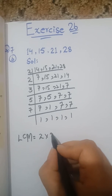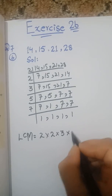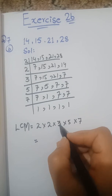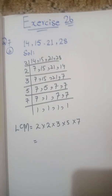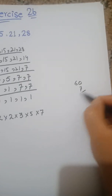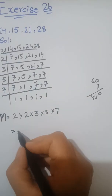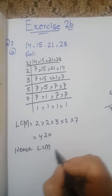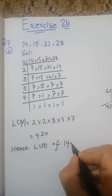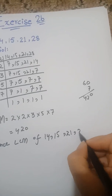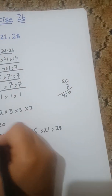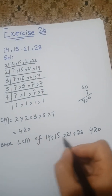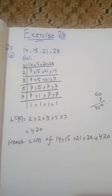LCM = 2 × 2 × 3 × 5 × 7. In sab ko multiply kar lete hain: 2 × 2 = 4, 4 × 3 = 12, 12 × 5 = 60, 60 × 7 = 420. Hence LCM of 14, 15, 21 and 28 is 420. Is tarah se ho jaayega.